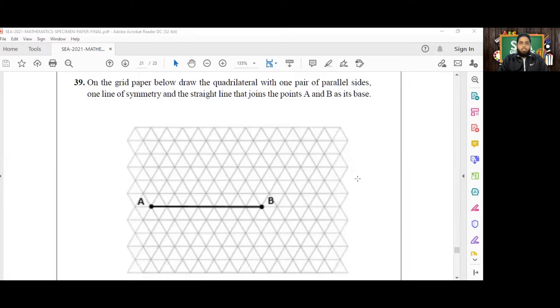On the grid paper below, draw the quadrilateral with one pair of parallel sides, one line of symmetry, and the straight line that joins the points A and B as its base. Okay, so we have the base A and B already drawn. Now we just have to turn this into a quadrilateral with one pair of parallel sides, one line of symmetry, and the straight line that joins A and B as its base.